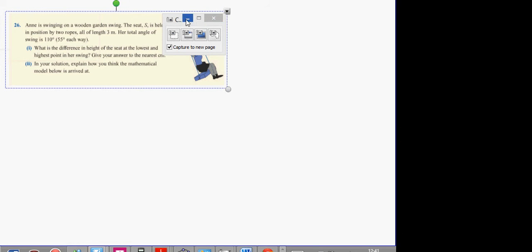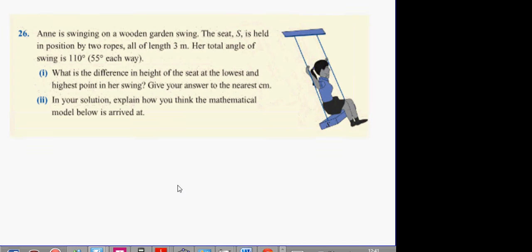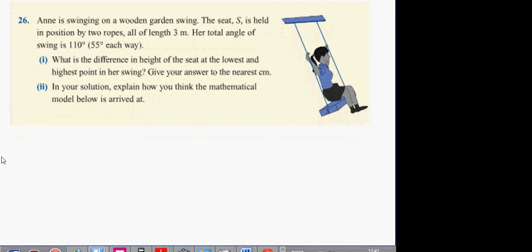The following: Anna is swinging on a wooden garden swing. Her seat is held in position by two ropes, all of length, I think that means each of length three. Her total angle of swing is 110 degrees, 55 degrees each way. What is the difference between the height of the seat at its lowest point in her swing and the highest point of the swing?